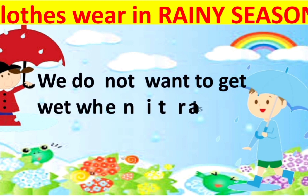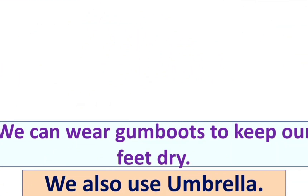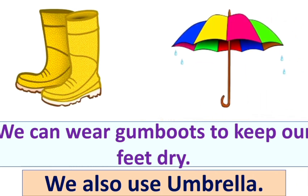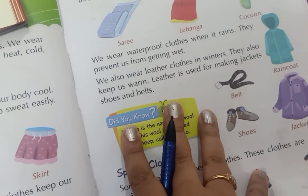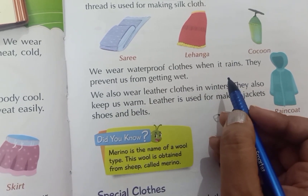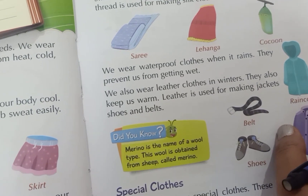Clothes we wear in the rainy season: we do not want to get wet when it rains, so we wear a raincoat over our clothes. We can wear gum boots to keep our feet dry. We also use a colorful umbrella. We wear waterproof clothes when it rains — a raincoat prevents us from getting wet.